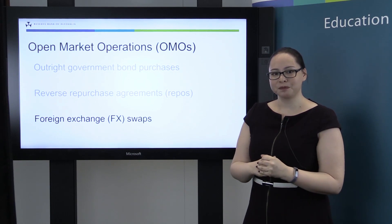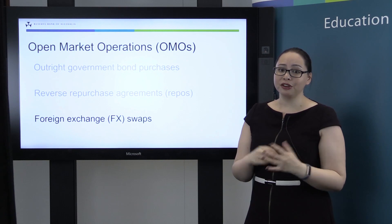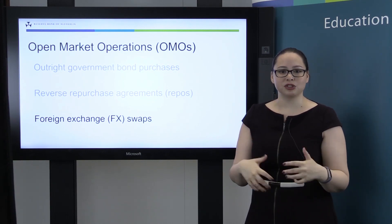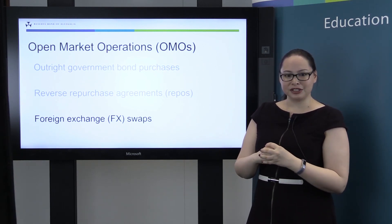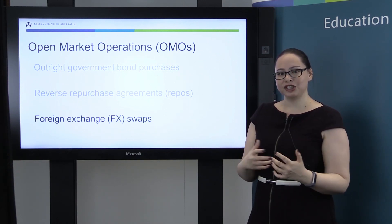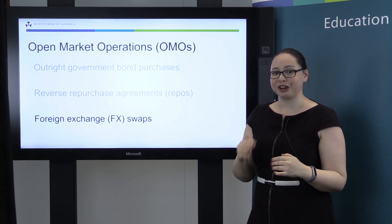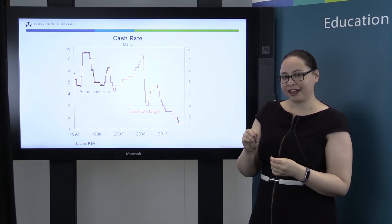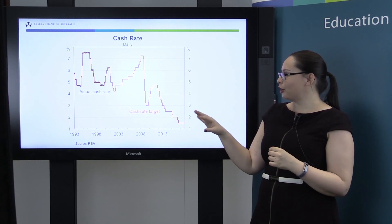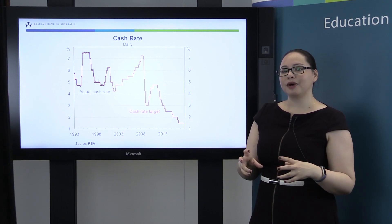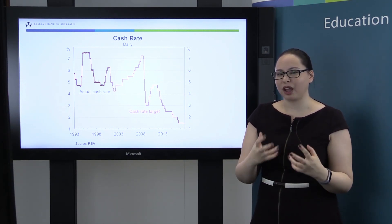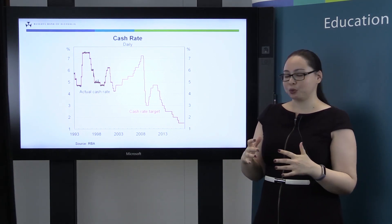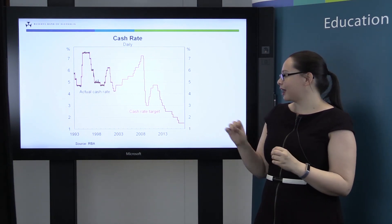Our third and final tool are foreign exchange swaps. FX swaps work very similarly to a repo — the only difference is that instead of bonds being used to collateralise the loan, we use foreign exchange instead, for example US dollars or Japanese yen. We would use all three of these open market operations tools to manage liquidity in the market and keep the cash rate close to the target level. Looking at the results: the actual cash rate, shown in black, and the cash rate target, shown in red, demonstrate that over time the actual cash rate has got a lot closer to the target. The market has learned it can rely on the Reserve Bank to supply the appropriate amount of liquidity, and in recent times the cash rate has remained really quite consistent with the target.